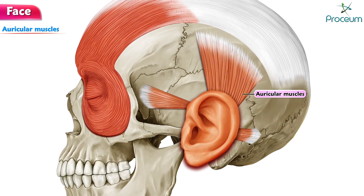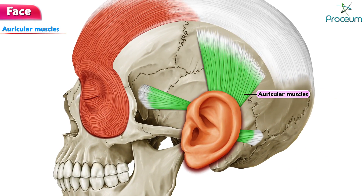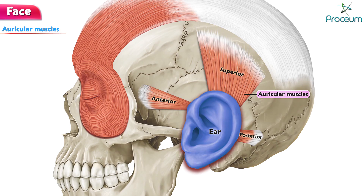Auricular muscles. Three of these muscles, which are muscles of facial expression, are associated with the ear. They are the anterior, superior, and posterior auricular muscles.